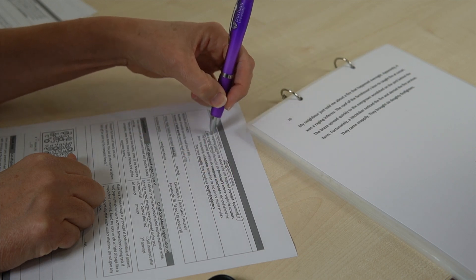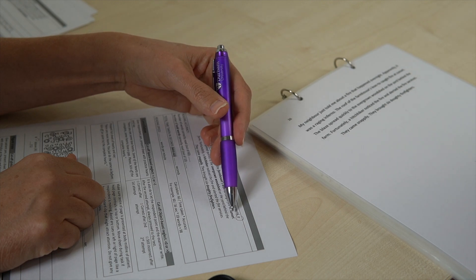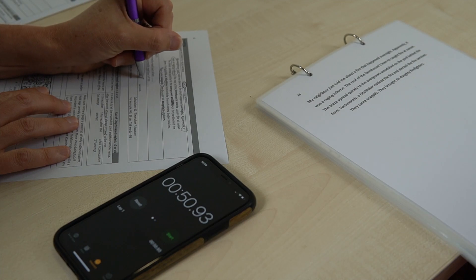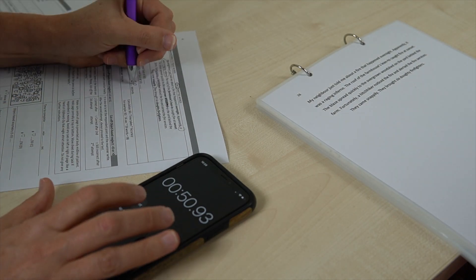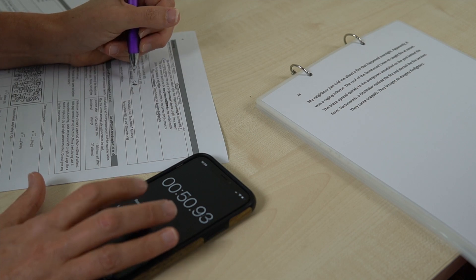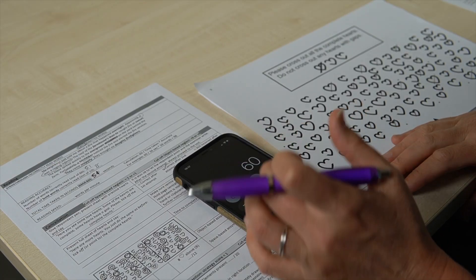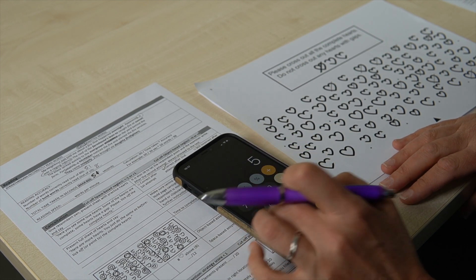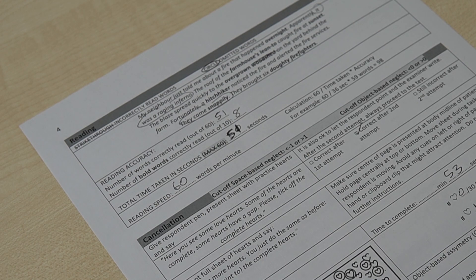You'll be circling any words that the patient didn't say. And you'll be putting a line through words that they maybe mispronounced or made up their own word. And you'll be recording their accuracy for how many words they read out of 60. And you'll also be recording how many of the bold words they said. That's out of 10. You'll be timing this task. So for example, you'll see that it took 51 seconds for the patient to complete their reading task. You'll take 60 and divide it by the time taken. So that'll be 60 divided by 51. Then you multiply that by the accuracy. In this case, the accuracy was also 51, which gives you 60 words per minute as your score.